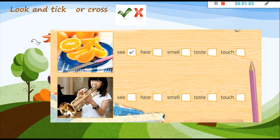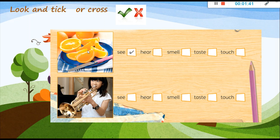It's an orange. Mmm. Can you see it? ¿La puedes observar? Yes, put a tick. Can you hear it? ¿La puedes escuchar? No. Can you smell an orange? Yes, of course. Tick. Can you taste it? Yes. Mmm. Put a tick. Can you touch it? Yes, of course. Put a tick. Very good.